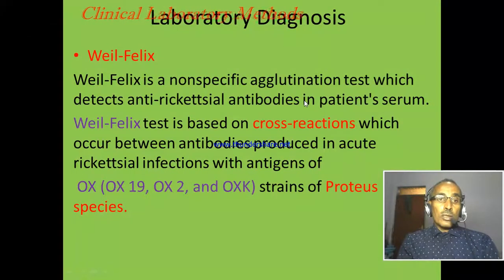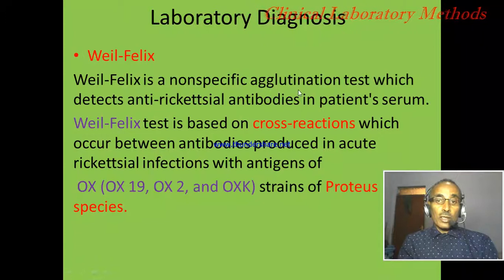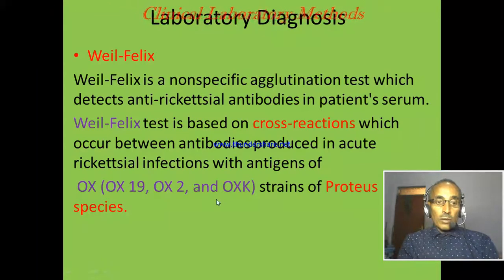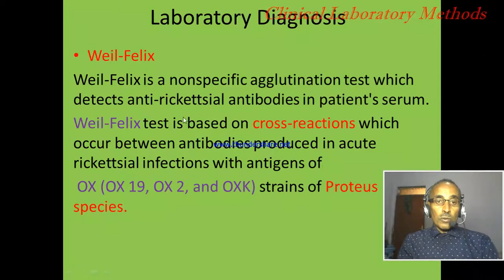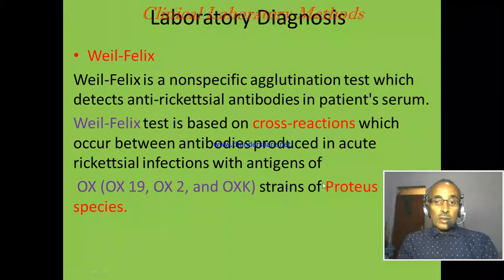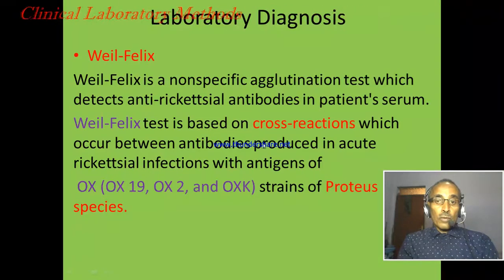The common laboratory diagnosis for typhus is the Weil-Felix test, which is a non-specific agglutination test. The reagent is prepared by collecting antigen from Proteus bacteria — Proteus OX19, OX2, and OXK. The antibody produced in response to rickettsial infection can cross-react with the reagent prepared from Proteus bacteria; therefore, this technique uses the principle of cross-reaction.